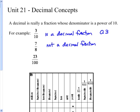23 over 100, or 23 hundredths, is a decimal fraction because the denominator is a power of 10. So we can rewrite that as 0.23, and that's understood to mean exactly the same thing.